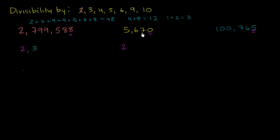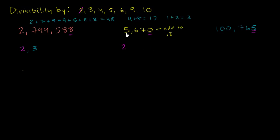For the second number, let's add up the digits — we can do this in our head pretty easily. 5 plus 6 is 11, plus 7 is 18, plus 0 is 18. If you add 1 plus 8 you get 9. The digits add up to 18, which is clearly divisible by 3 and by 9. So this number is also divisible by 3.